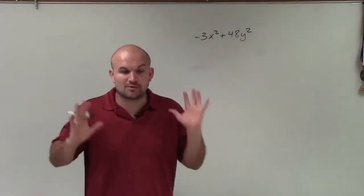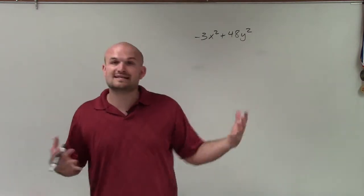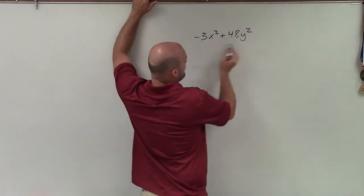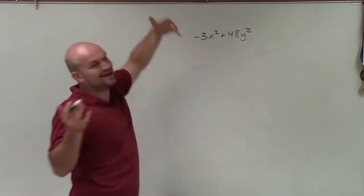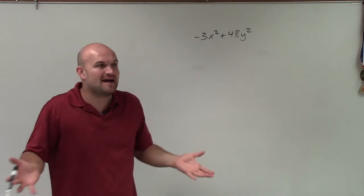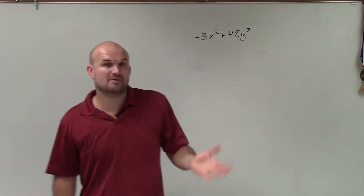But before I even get to difference of two squares, one of the major important things I want to do is look for greatest common factors that I can factor out. And automatically know that when my variables, I have an x squared and a y squared, those are not common to each other, so therefore I can't factor any variables out. However, negative 3 and 48, I want to see, is there common factors for that?